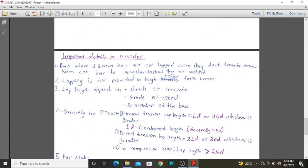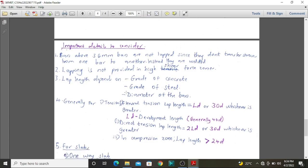Including lapping in slabs, the first one includes that bars above 36mm are not supposed to be lapped at all. Instead, they are normally supposed to be welded. This is because these bars, if lapped, they are not able to transfer stresses from one bar to another efficiently.